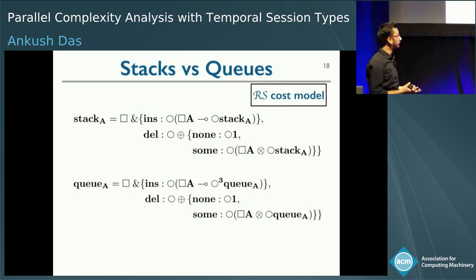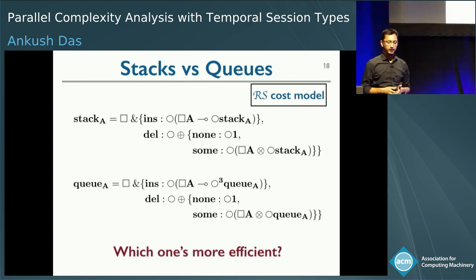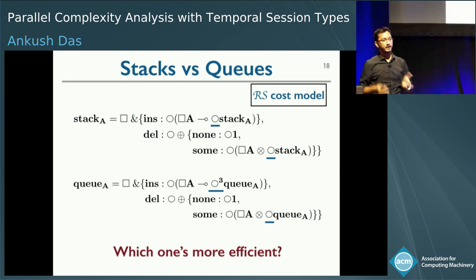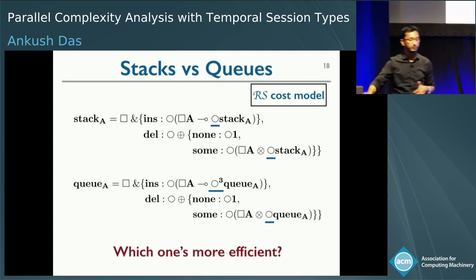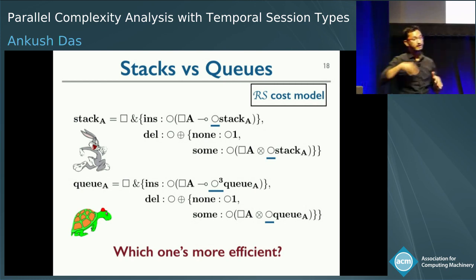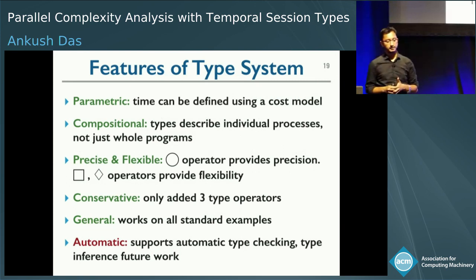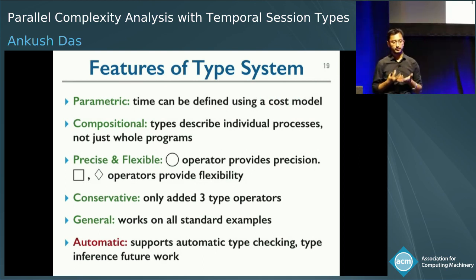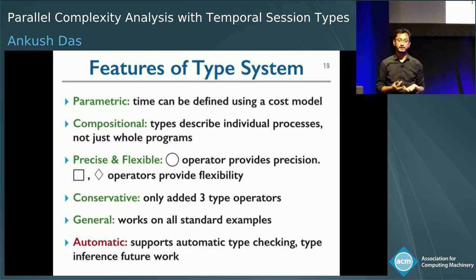Now suppose I want to compare stacks and queues. Looking directly at the types: the response time for insertion in stacks is one (that's when the type recurses), whereas for queues it's three. For deletion, the response time is one for both stacks and queues. So you can see directly from the type — without even looking at the implementation — that stacks are more efficient than queues for insertion. That's another strength of our type system: we don't need to inspect the implementation to do this efficiency comparison.